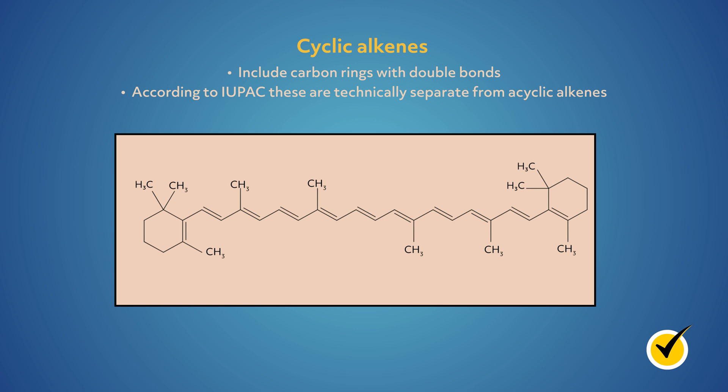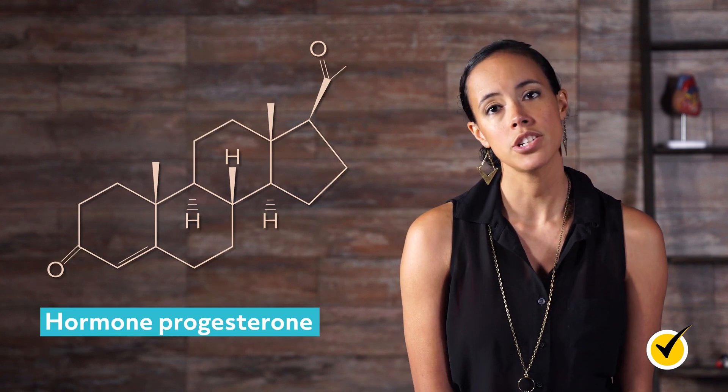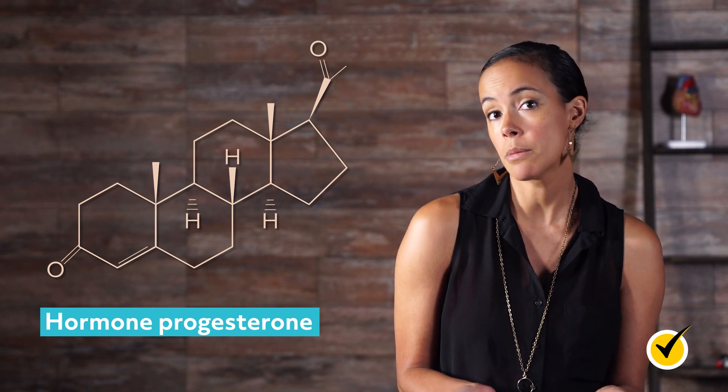Importantly, while by definition an alkene is an unsaturated hydrocarbon with a double bond, it is common to describe the carbon double bond itself as an alkene. For example, in the hormone progesterone, while the entire molecule is obviously more complex than a simple alkene, you might hear someone say there's an alkene in the bottom left ring.